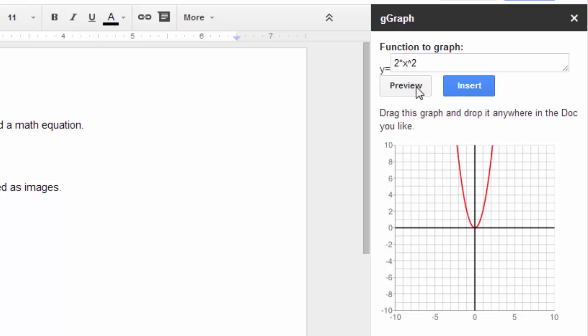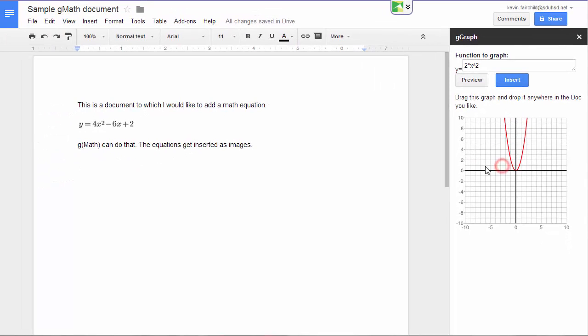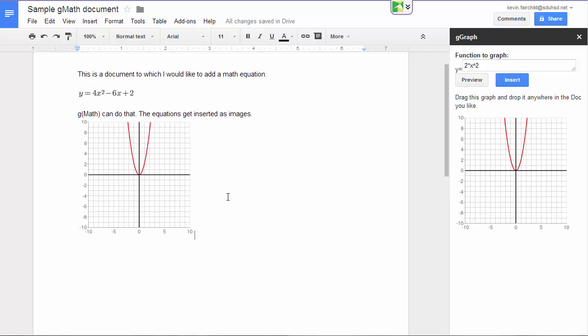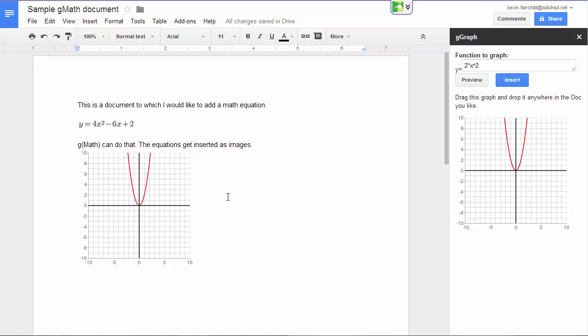It gives me an image of this graph, and I can just drag it to my document and insert it wherever I like. Now it's in my document, and I can print that, copy it, or do whatever I like with it.